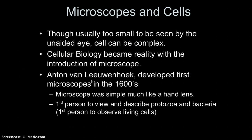Without the microscope, we would not know what we know today about cells and their physiology. Though usually too small to be seen by the unaided eye, cells can be very complex. We'll look at both prokaryotic cell types — the simplest — and then the more complex eukaryotic cells. Cellular biology became a reality with the introduction of the microscope in the 1600s, first developed by Anton von Leeuwenhoek. He was the first person to view and describe protozoa and bacteria using a microscope.